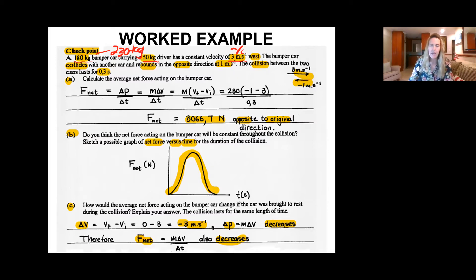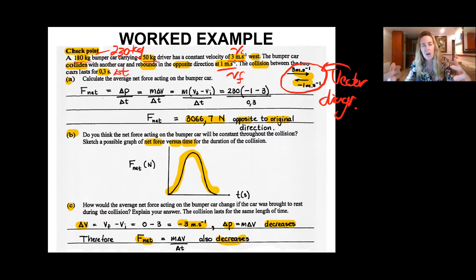The bumper car then collides with another car and it will rebound. So it moves in a certain direction and then it rebounds in the opposite direction at a speed of one meter per second. That is your final velocity. The vector diagram is given to you on the side here. And now the collision between the two cars will last 0.3 seconds. That will be the change in time or the contact time, that interval of time over which the net force is acting as we've discussed.